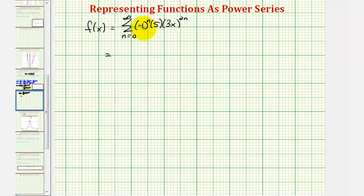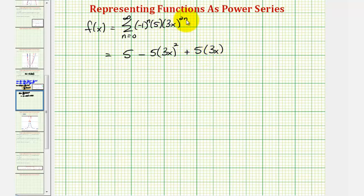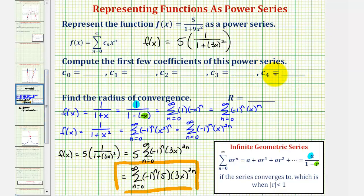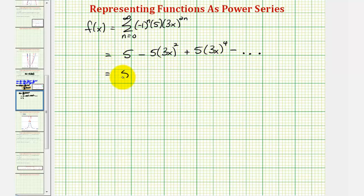When n = 0: (−1)⁰ · 5 · (3x)⁰ = 5. When n = 1, the term is negative: −5 · (3x)² = −5 · 9x² = −45x². When n = 2, the term is positive: +5 · (3x)⁴ = 5 · 81x⁴ = 405x⁴. The highest degree coefficient we need is for the degree four term.